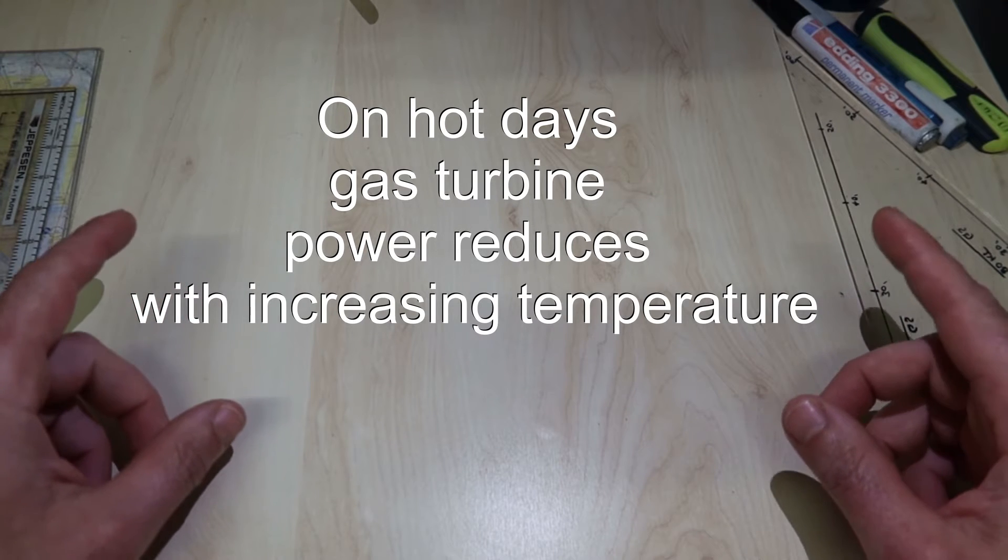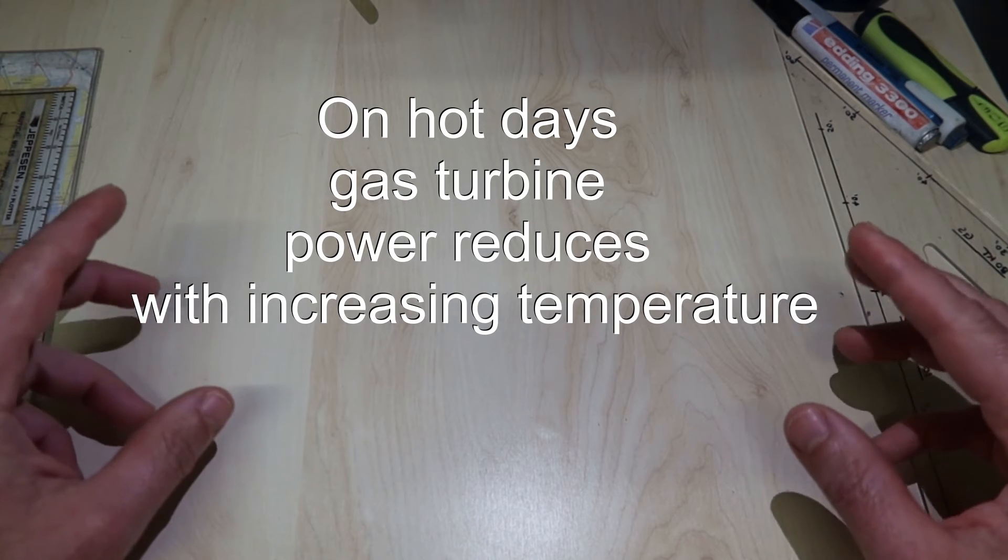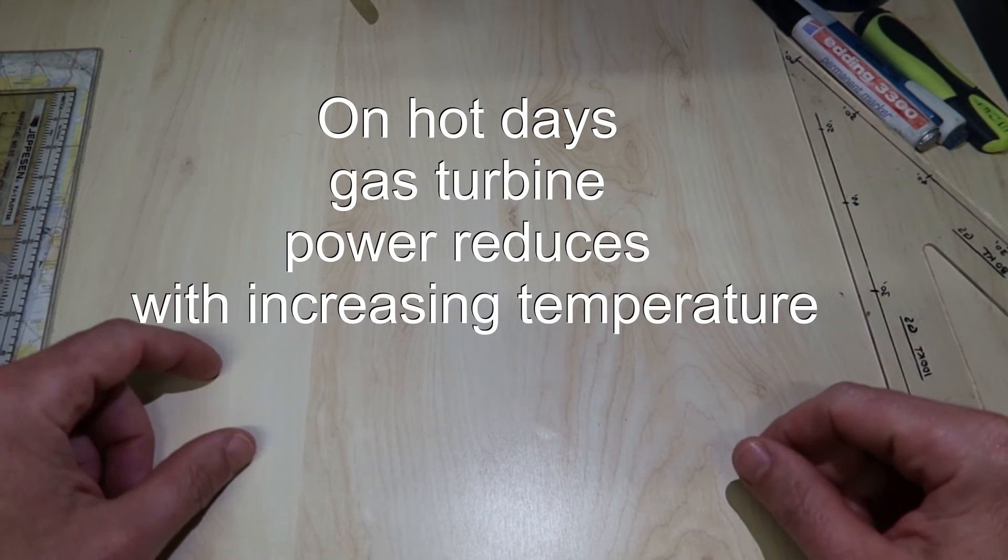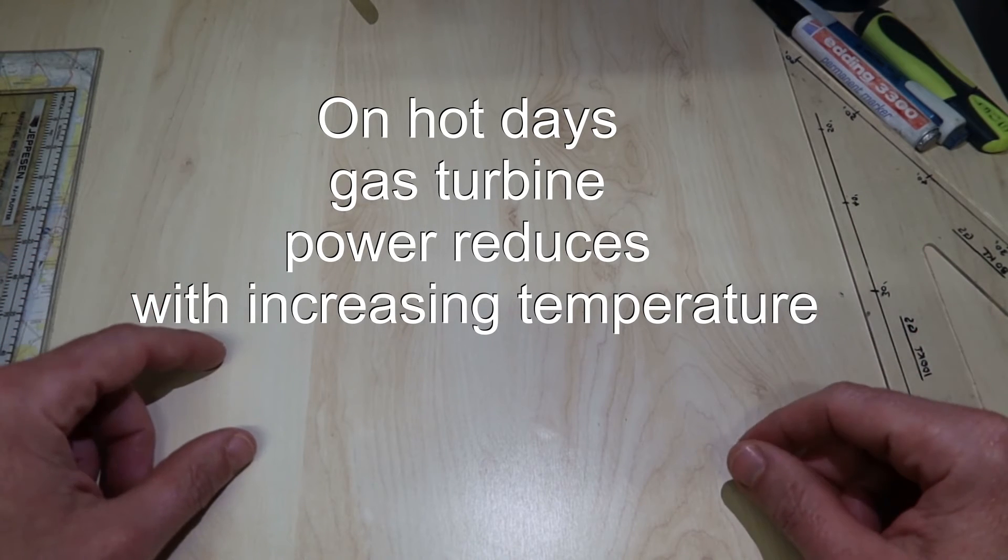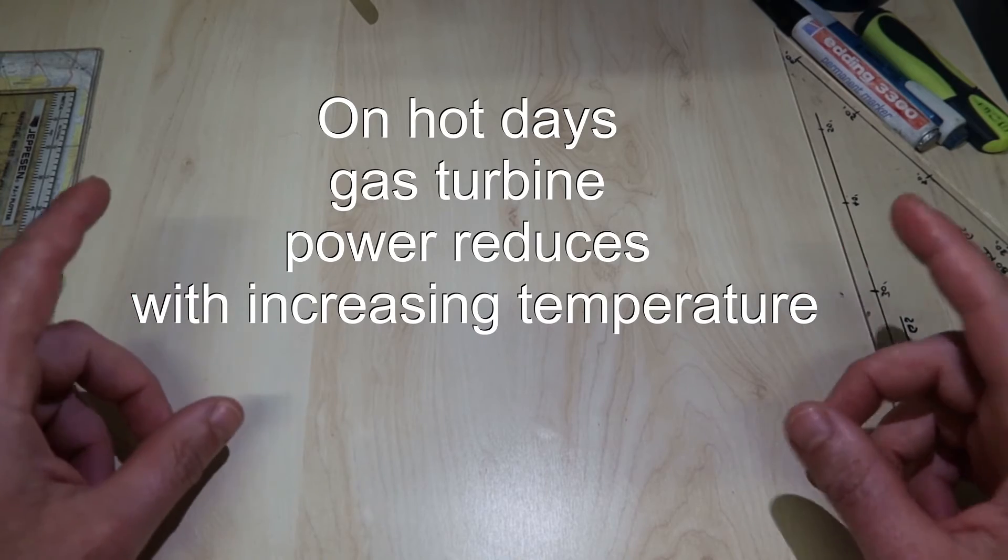This means at high temperatures, gas turbine power varies with temperature, but at low temperatures, the power is constant.